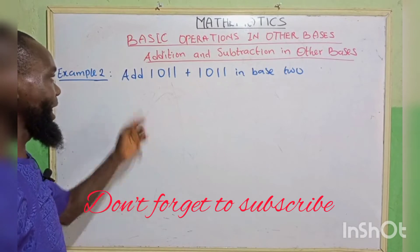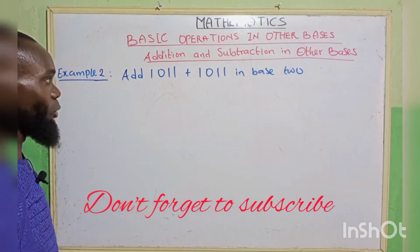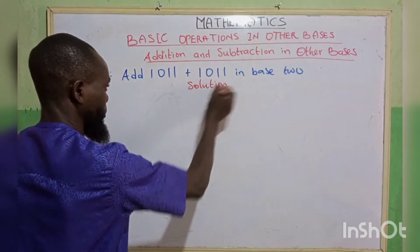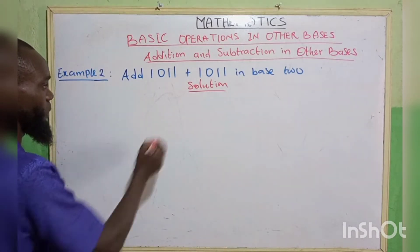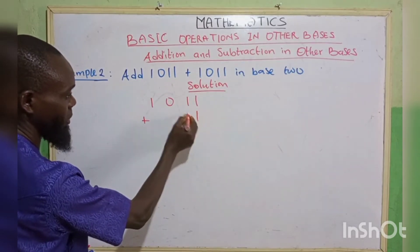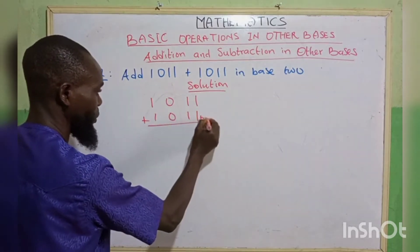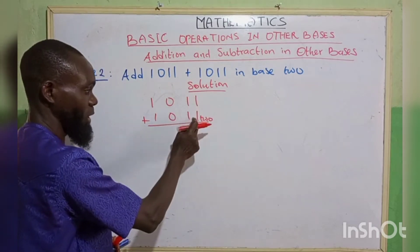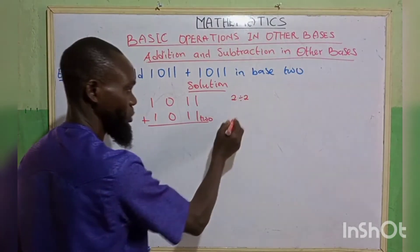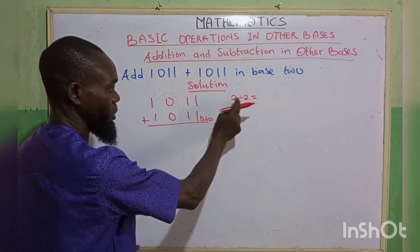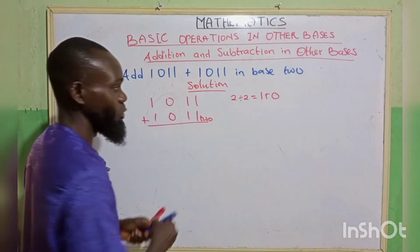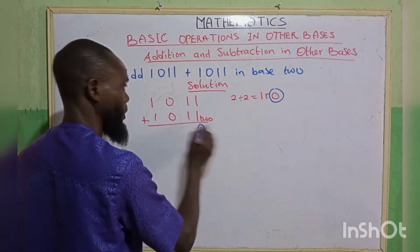Example 2: add 1011 plus 1101 in base 2. Starting from the right-hand side: 1 plus 1 gives 2. Since 2 is equal to the base, we do 2 divided by 2, which gives 1, remainder 0. We write remainder 0 and carry the 1.